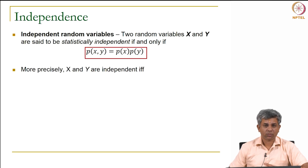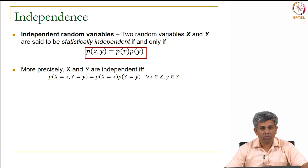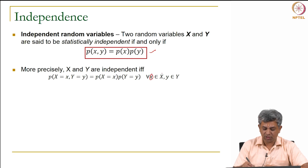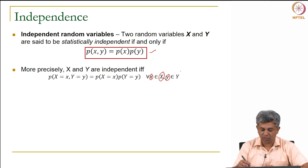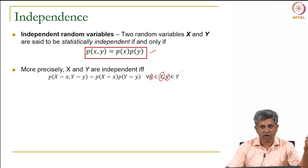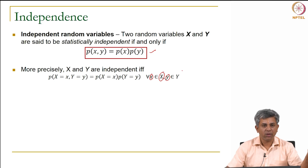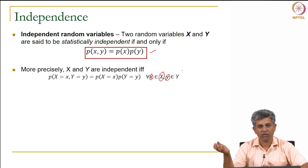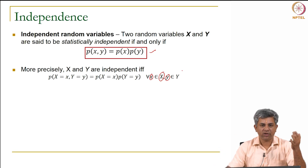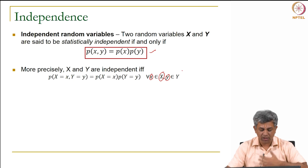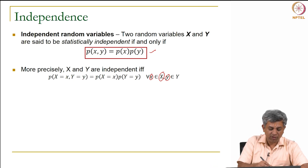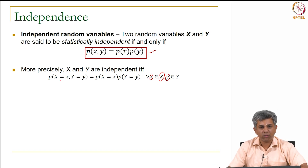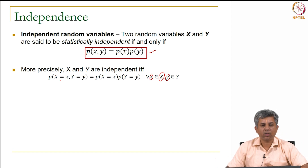To be more precise, for every possible value x belonging to event X and every possible value y belonging to event Y — for example, tossing one coin on one hand and another coin on the other hand, where each outcome is heads or tails — for all combinations, the joint probability P(X,Y) should equal the product of the marginal probabilities P(X=x) × P(Y=y).